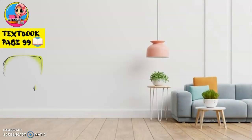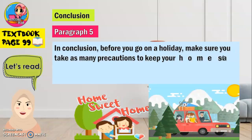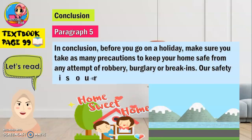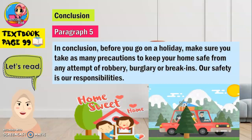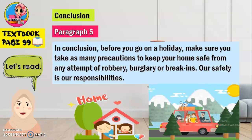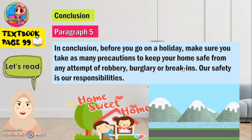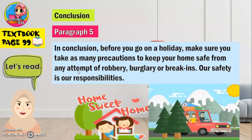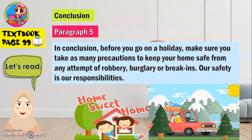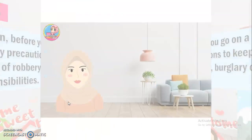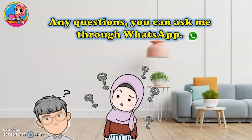The last paragraph is the conclusion, paragraph five. You can write: 'In conclusion, before you go on a holiday, make sure you take as many precautions to keep your home safe from any attempt of robbery, burglary or break-ins. Our safety is our responsibility.' I hope you understand. It's time for you to complete your exercise in the link given. Any questions, you can ask me through WhatsApp. Thank you.